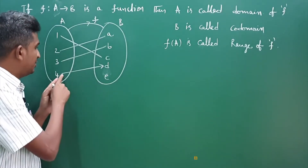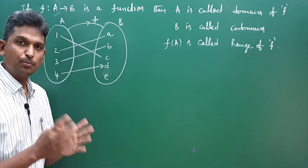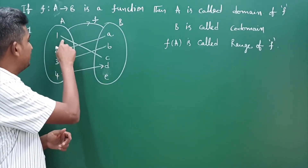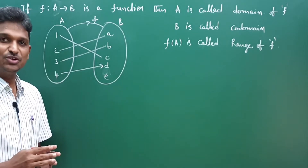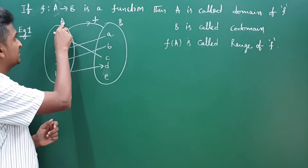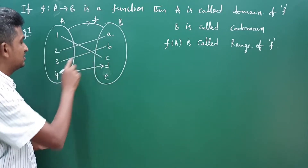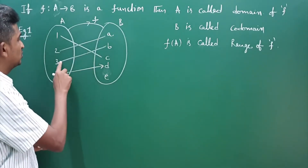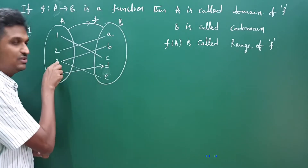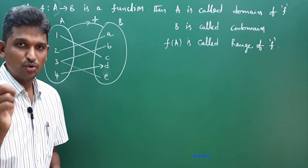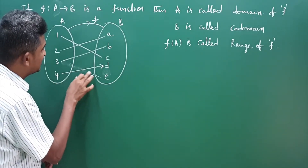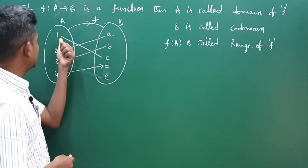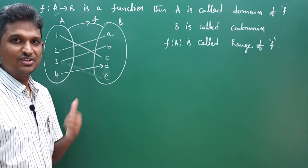Observe this one. The element 4 is mapped to d. Now, is it a function? In simple words: every element of the first set is used, and it is used only once. If one, two, three, four — every element is used only once — then it is a function. Suppose three is used twice; then it is not a function. Here, every element is used and used only once, so this is a function.